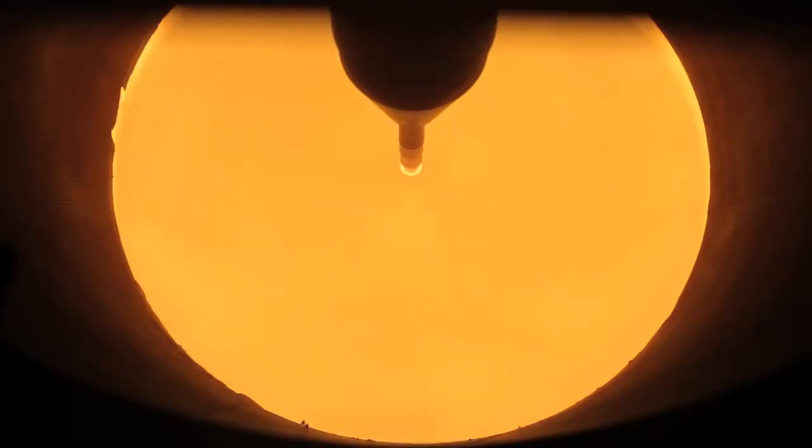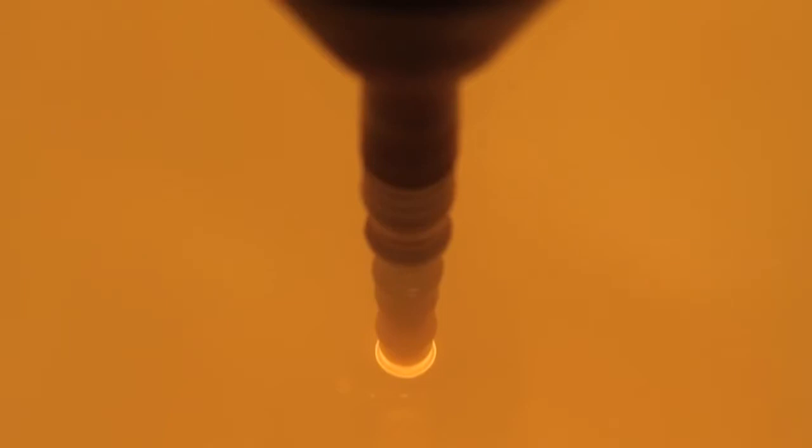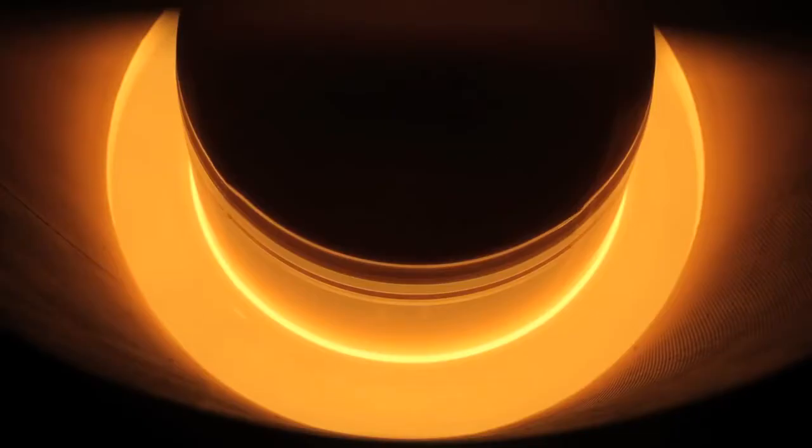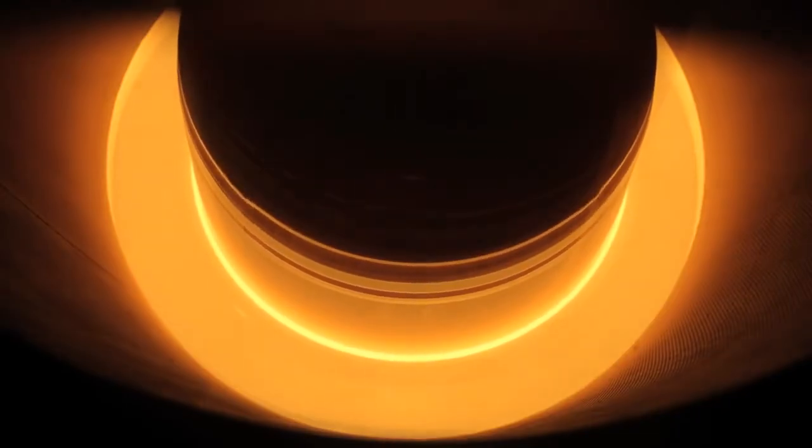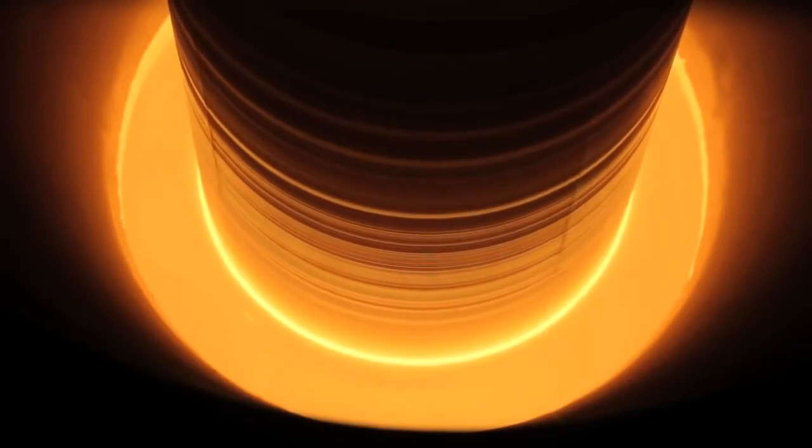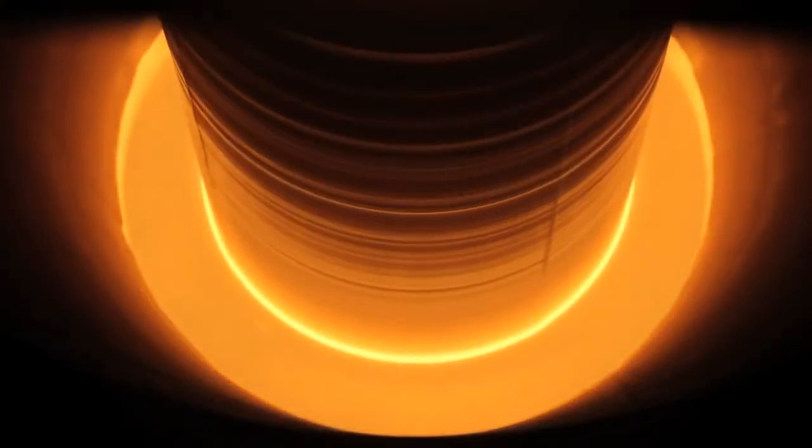A thin rod, known as the seed crystal, is then submerged into the liquid raw silicon and pulled back up very slowly. At this step in the process, the liquid silicon accumulates on the seed crystal and solidifies.